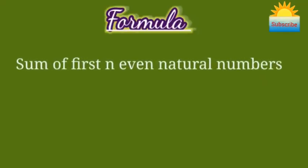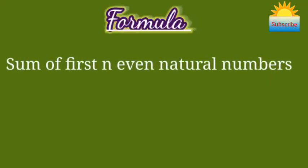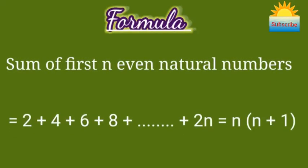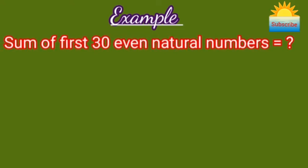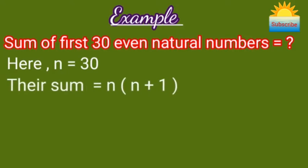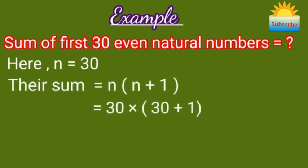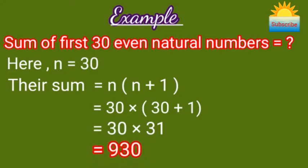The sum of the first n even natural numbers is n(n+1). What is the sum of the first 30 even natural numbers? Here n is 30, so their sum is n(n+1), that is 30 into 30 plus 1, which equals 30 into 31, which is 930.